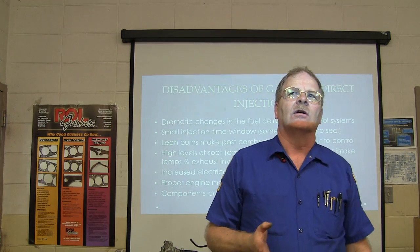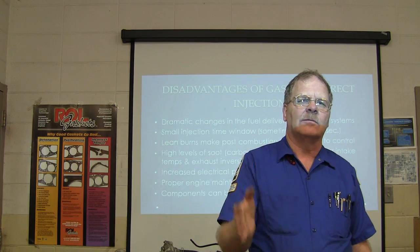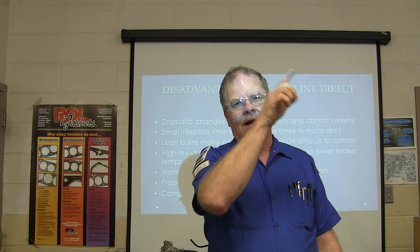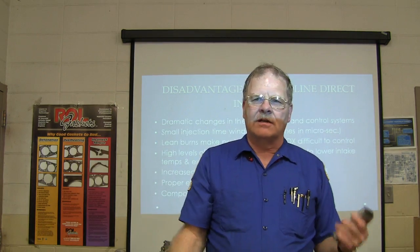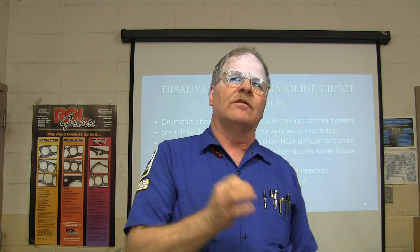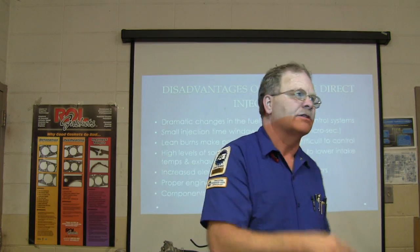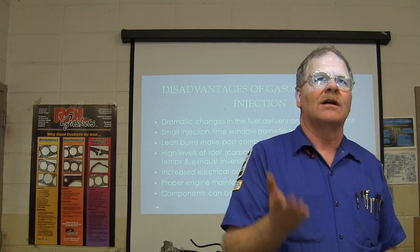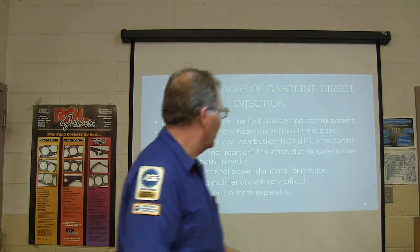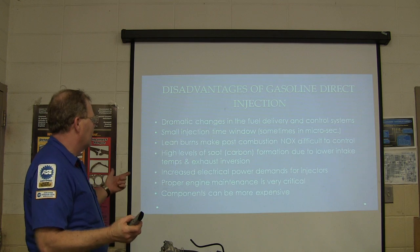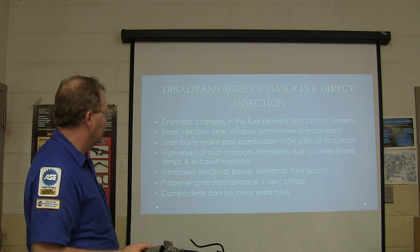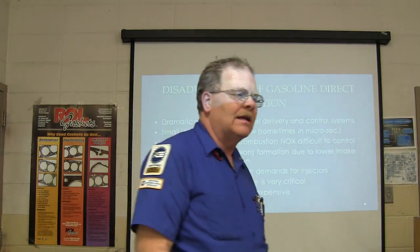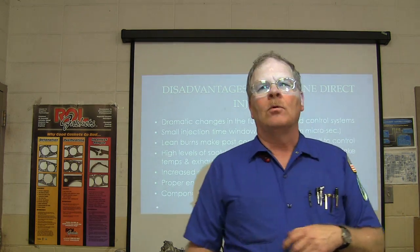Just as the oxygen sensor feedback system monitors exhaust and adjusts the air-fuel mixture continuously, the GDI fuel rail pressure is also a closed-loop system. The system can change not only how the injector sprays, but also the high-pressure fuel rail pressure itself, because it has a feedback sensor and control mechanism for that purpose.